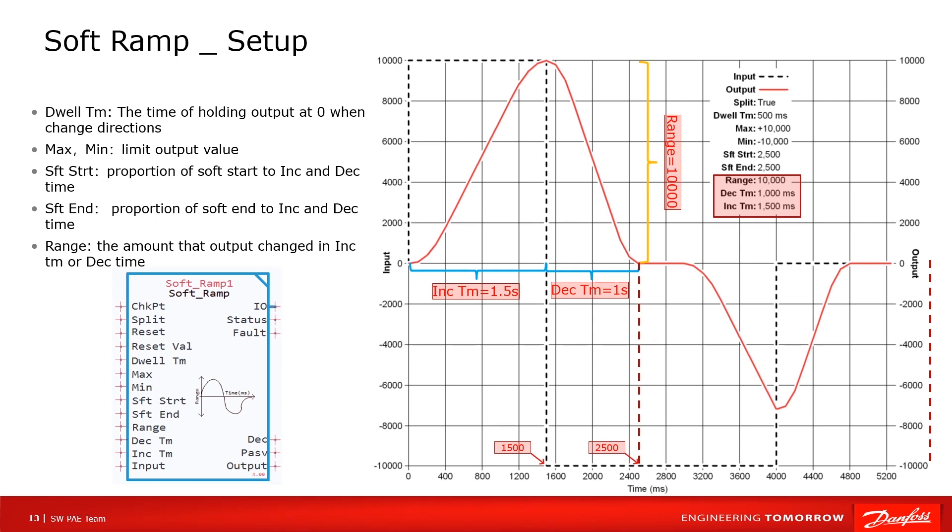For example, range is set to 10000. Increase time is set to 1500 milliseconds and decrease time is set to 1000 milliseconds. So it takes 1.5 seconds for output to increase from 0 to 10000 and 1 second for output to decrease from 10000 to 0.